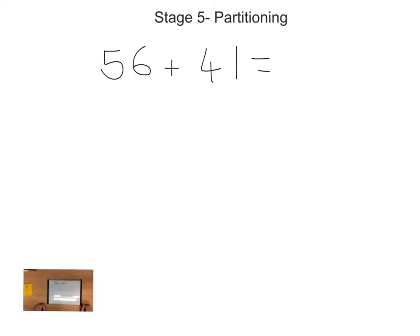There's a little video which we'll show on here, which hopefully you'll be able to use to support you. It's a stage before the bit I'm going to show now, but it'll make more sense. If we do 56 and 41, what we're going to do is make sure we can partition the 56 into its two parts.